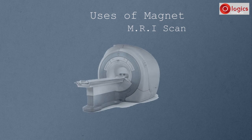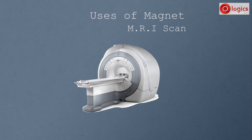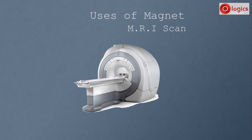Magnets are also used in medical instruments like MRI scanners. This is an MRI scanner — it is used to scan or see organs inside a patient's body. This dome contains a number of magnets which radiate a magnetic field and scan the patient's body.